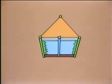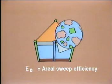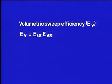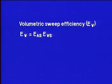And the displacement efficiency, E sub D, is the fractional amount of oil contacted that is actually displaced to a production well. The product of aerial and vertical sweep efficiency tells us the fractional volume of the reservoir contacted by the displacing fluid — the volumetric sweep efficiency, E sub V. The displacement efficiency is the fraction of oil in this swept volume that is recovered.